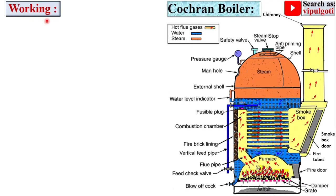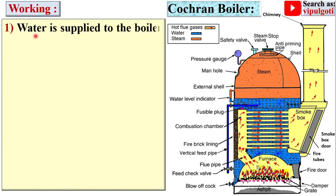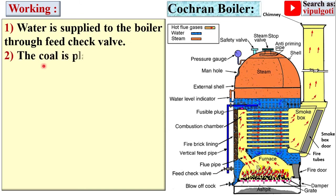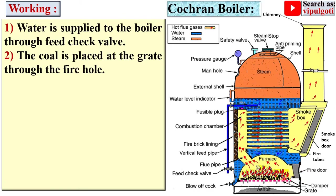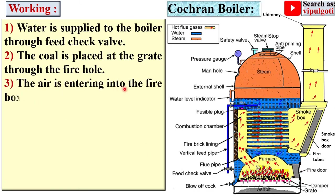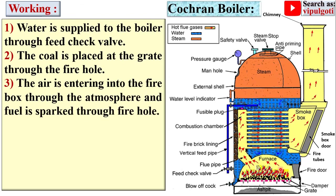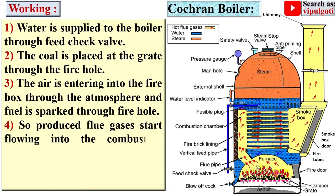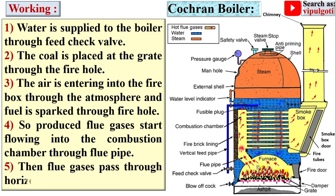Now the working of the Cochran boiler. First, water is supplied to the boiler through the feed check valve. Coal is placed at the grate through the fire hole. Air enters into the firebox from the atmosphere, and fuel is fired through the fire hole. The produced flue gases start flowing into the combustion chamber through the flue pipe, and then pass through the horizontal fire tubes.